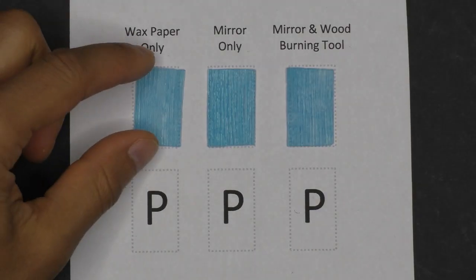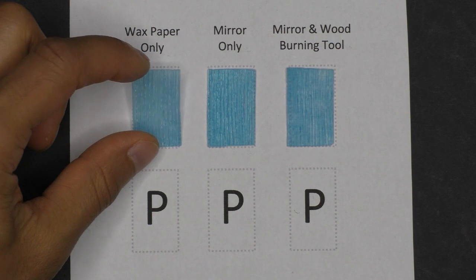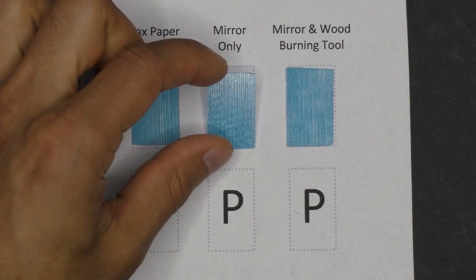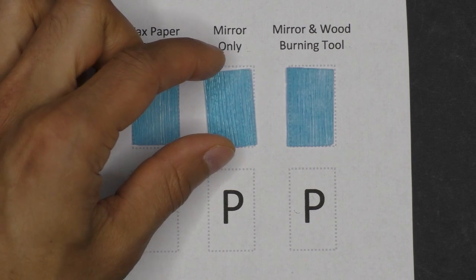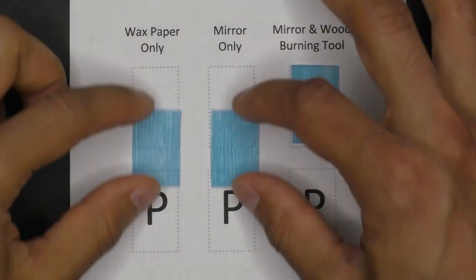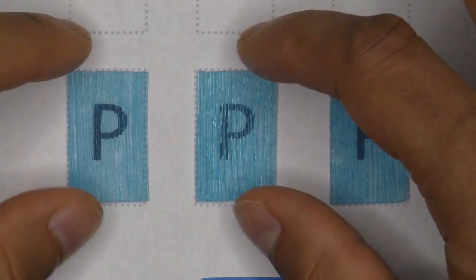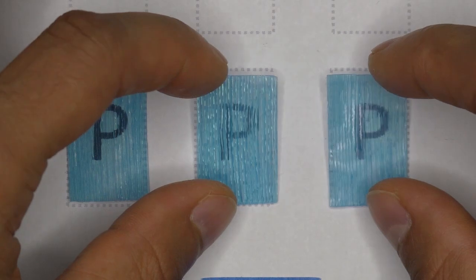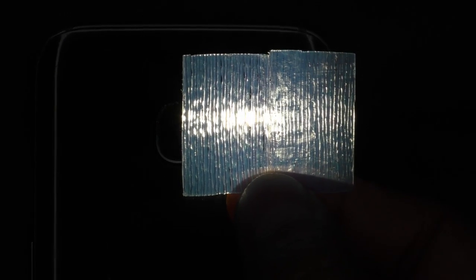When you compare all three side-by-side, my vote is that the mirror-only part looks the best. Wood burning can't get rid of the layer lines, and it has the negative effect of messing up the smooth side that was against the mirror. And when you start comparing the visibility through these various methods, I don't see a huge difference between them. They also look very similar when you put a light behind them.